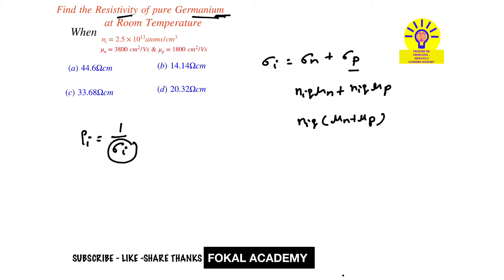Here Ni is the intrinsic concentration already given, and mu n and mu p are mobilities of electrons and holes already given. Here q is the charge of electron, which equals 1.6 times 10 to the power minus 19 coulombs, a constant value.